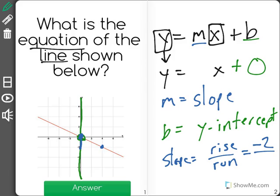And the run, how far does it go across? Well, it goes across 4, giving us a slope of negative 2 fourths, which we can simplify by dividing both sides by 2 to be negative 1 half.